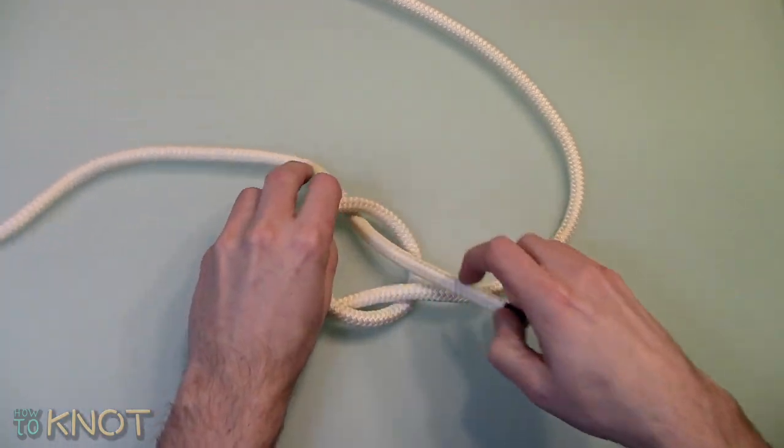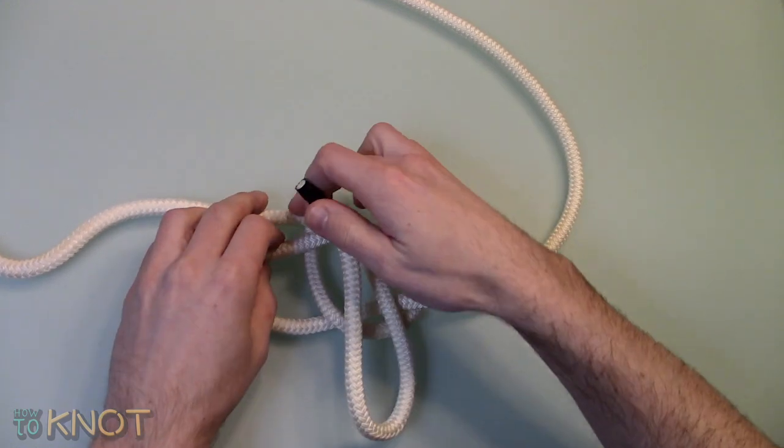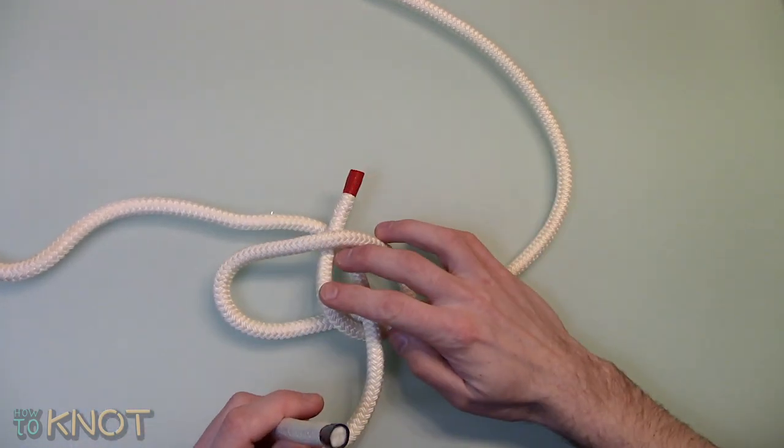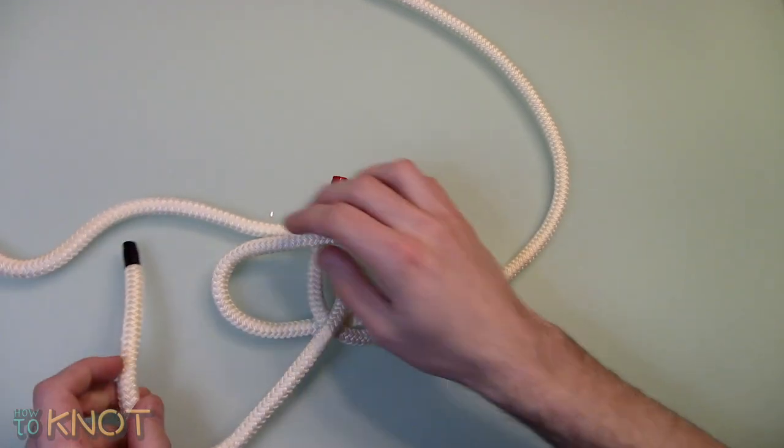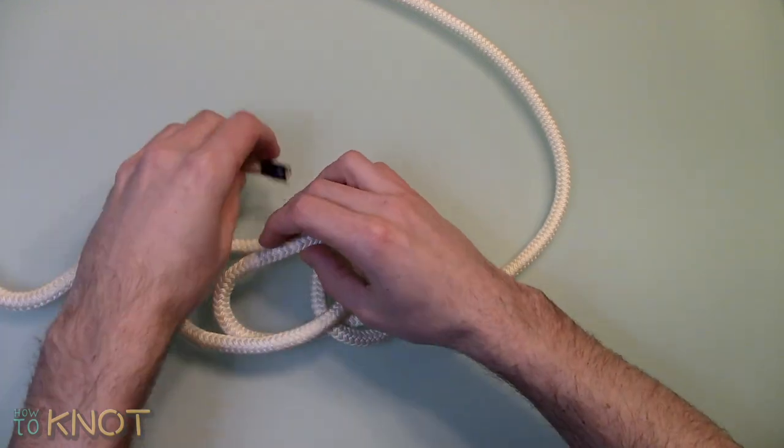Feed the working end of the other rope through the overhand knot, then create an overhand knot while threading it through the original knot.